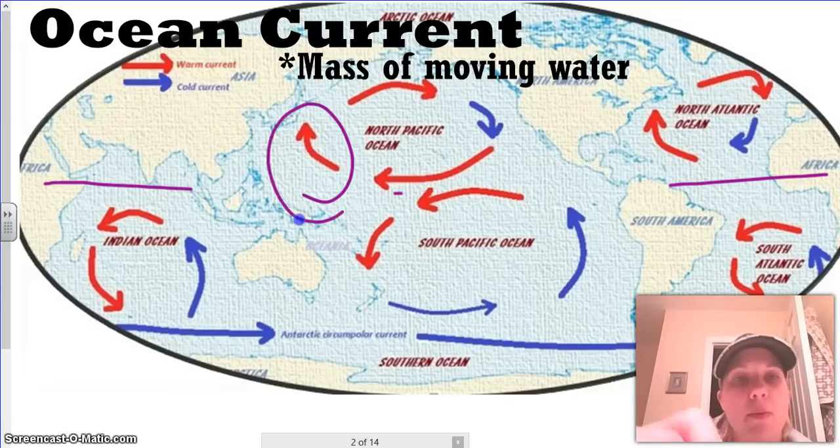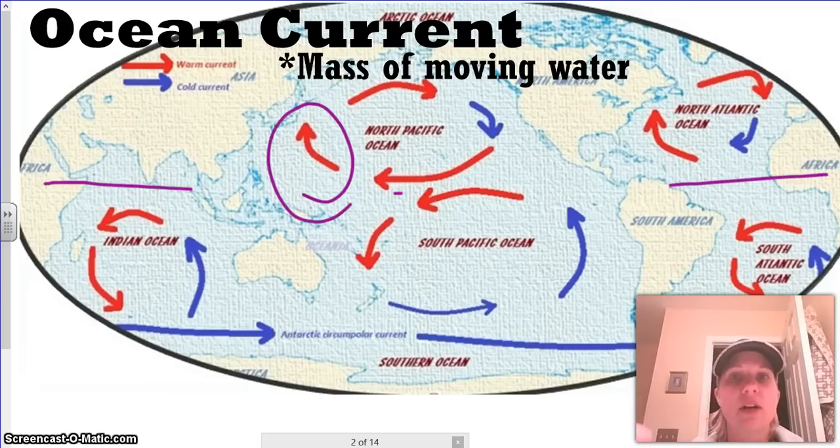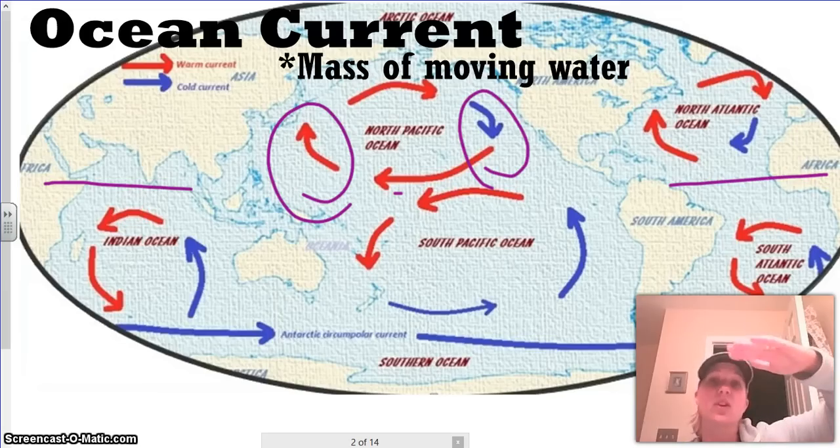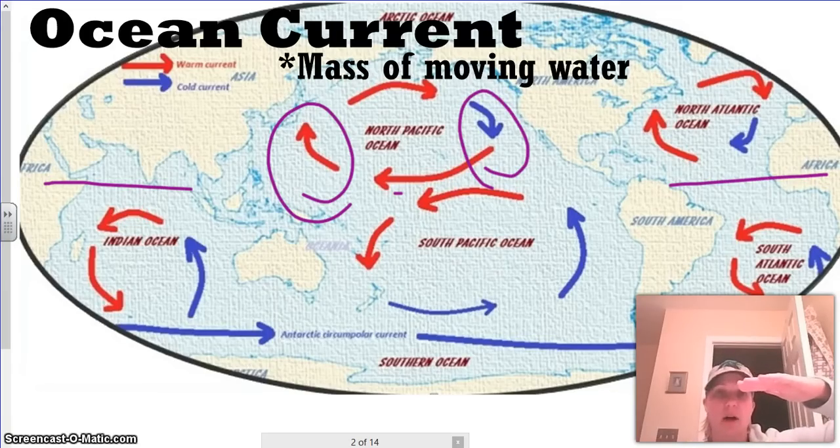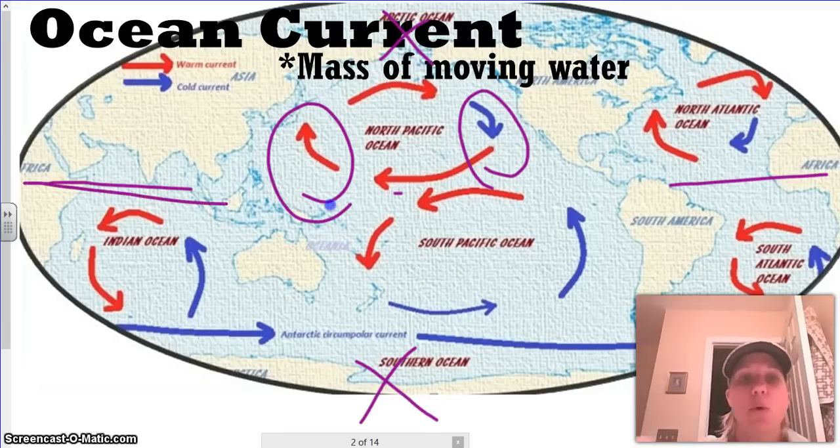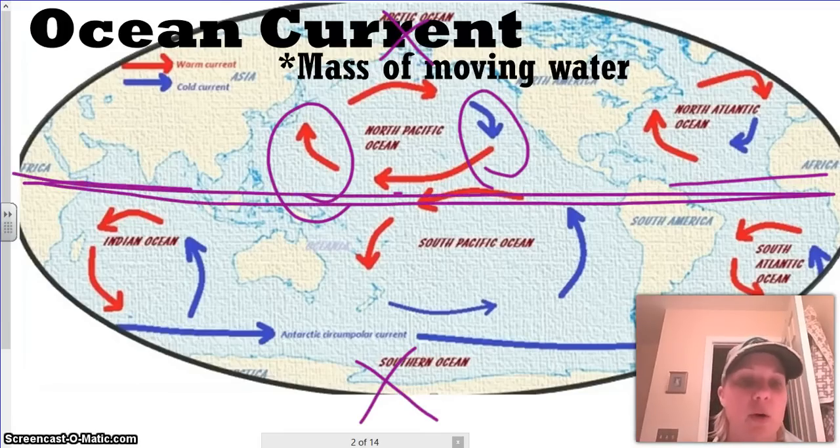When we look at this map, we have red indicating the warmer currents and blue indicating the colder currents. Warmer currents are going to tend to be towards the surface more, as colder would be down at the bottom. Colder currents are going to originate from the poles, and the warmer currents are going to originate from the equator.